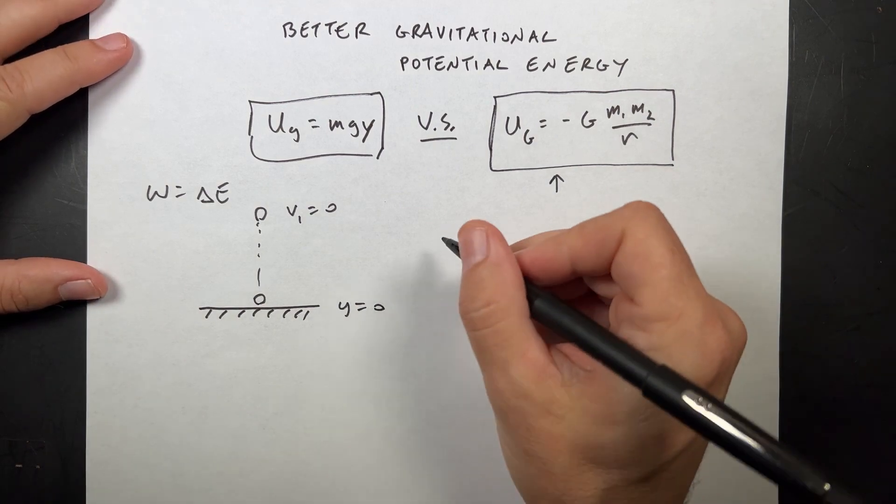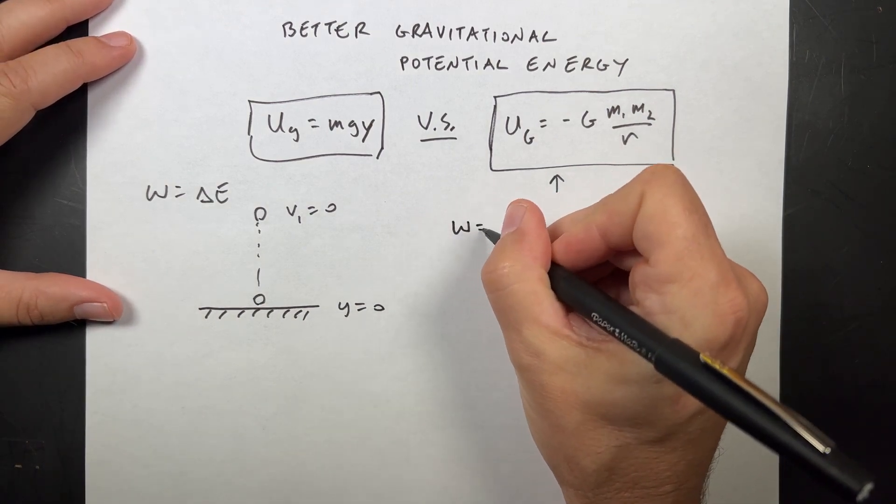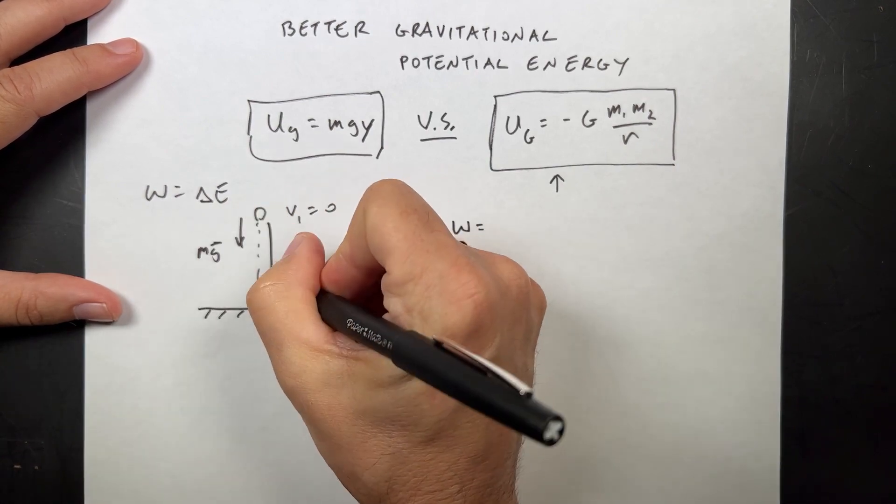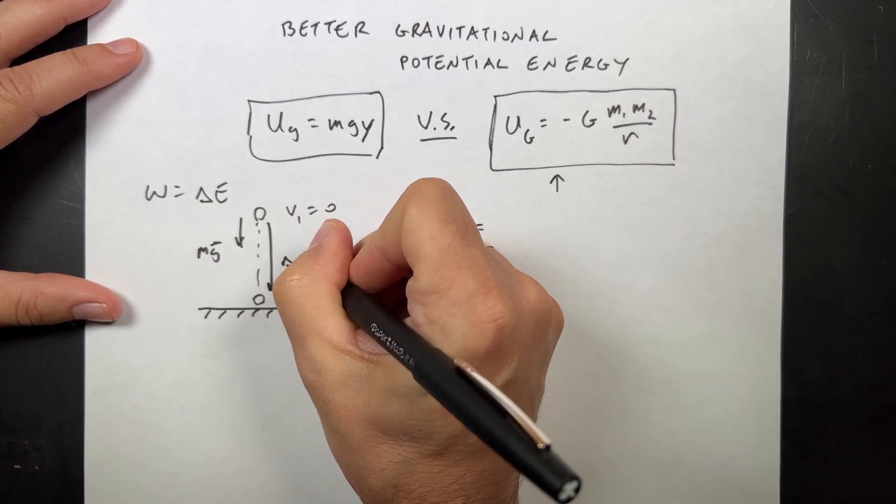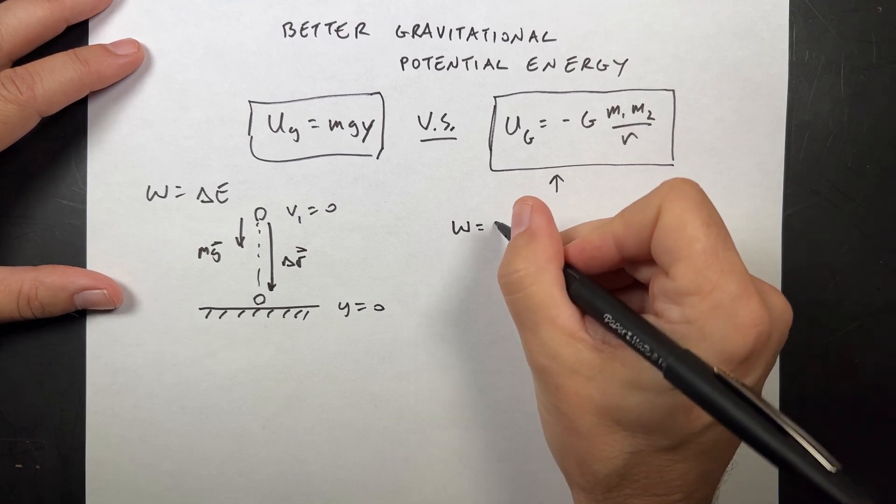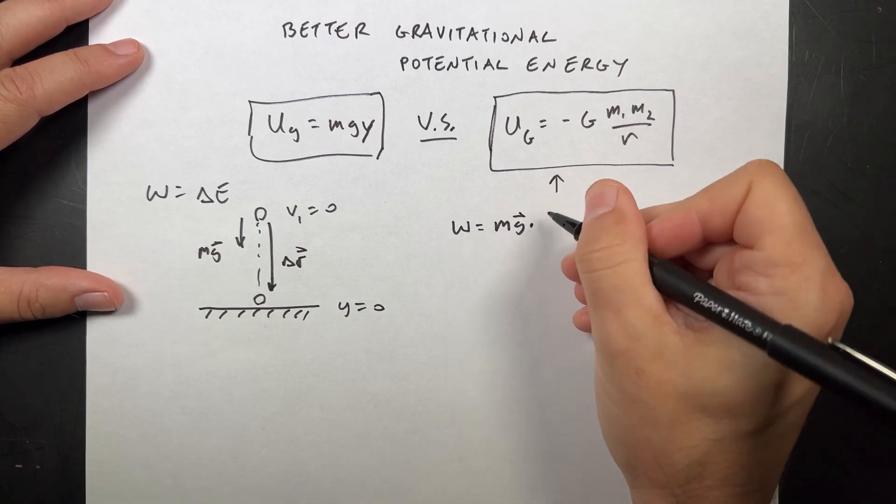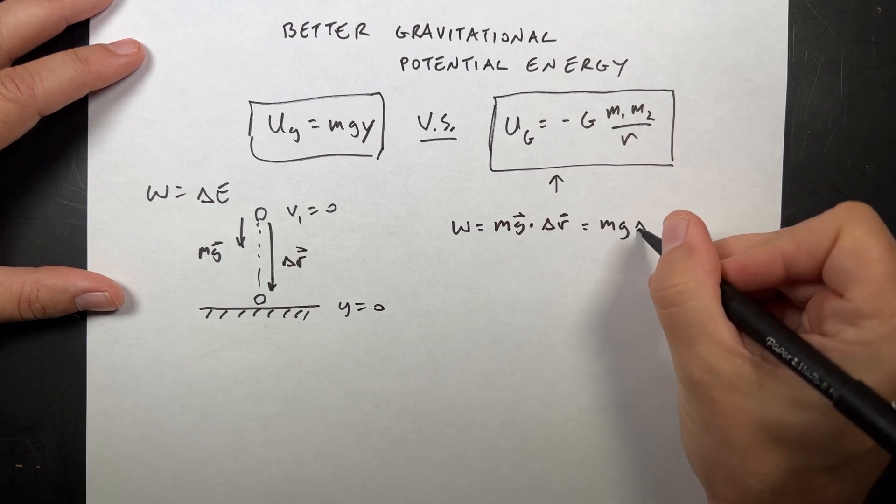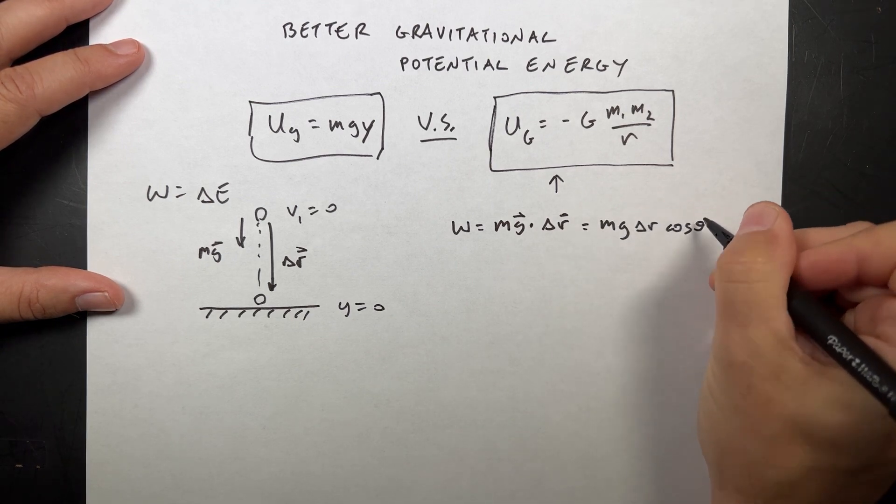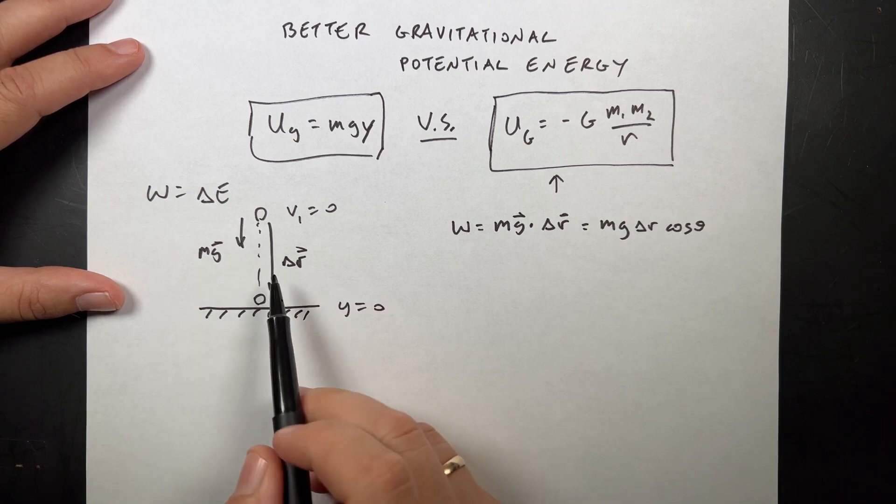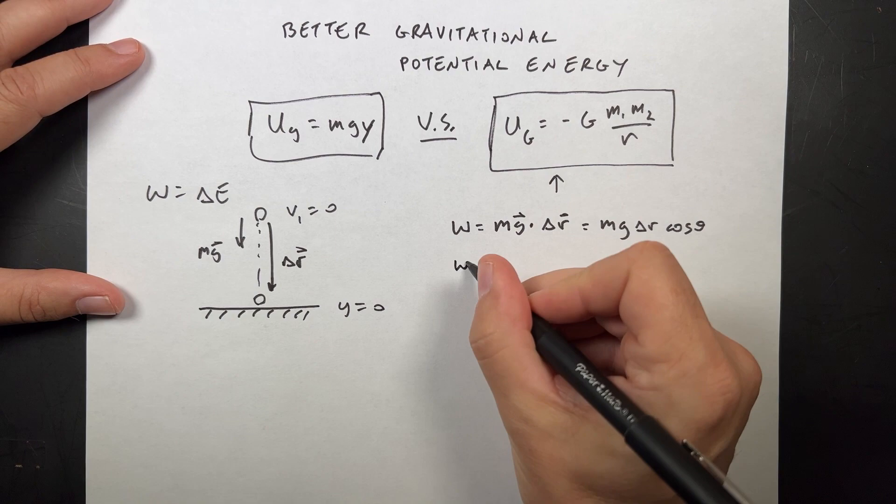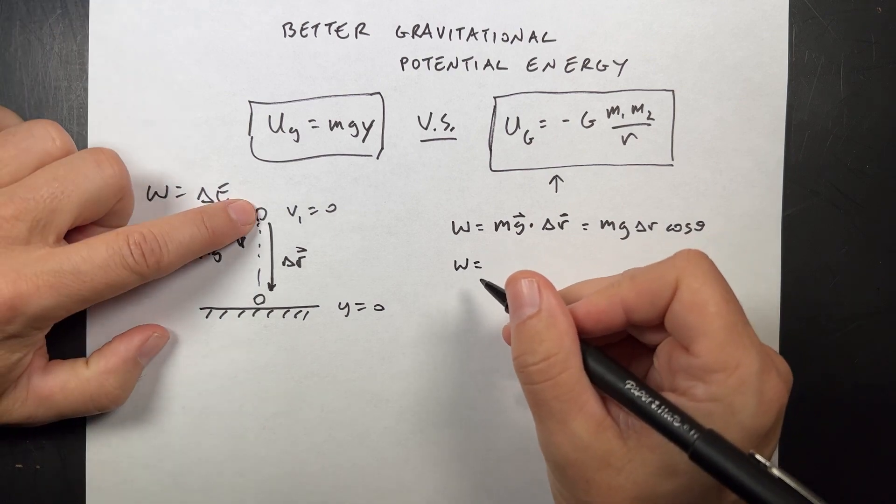Right before it hits the ground, I want to find out how fast it's going. I can use the work-energy principle. I could say work is going to - there's a gravitational force mg. I have delta R that way also. So the work is going to be mg dot delta R, or you could write that as mg delta R cosine theta.